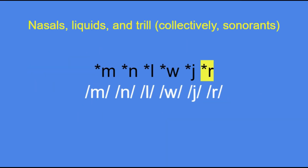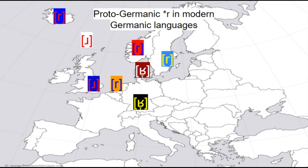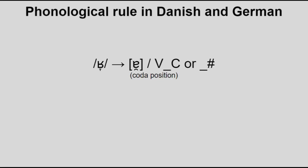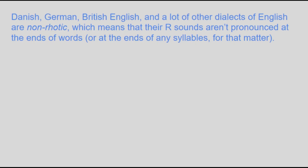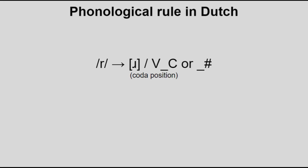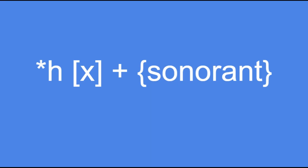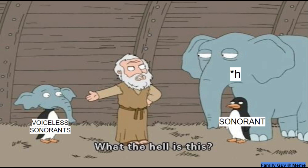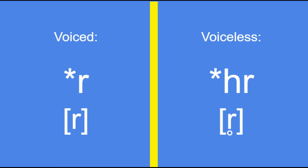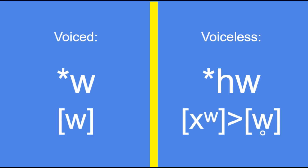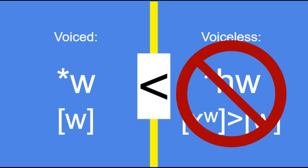Next, the trill r has had interesting evolution. It remains as a trill in most North Germanic languages and some dialects of West Germanic, but in many German dialects and in Danish it's now the voiced uvular approximant or trill, and actually becomes a vowel in coda position. In English it's now the voiced alveolar approximant, and can be dropped in some dialects. Dutch has retained the trill r but now has a vocalic allophone in coda position. Occasionally, Proto-Germanic had xh before one of these sounds, and the two merged to form voiceless liquids and trills — a rare linguistic feature — creating a phonemic distinction like between r and hr. These voiceless sonorants would all merge back with their voiced counterparts in most Germanic languages.